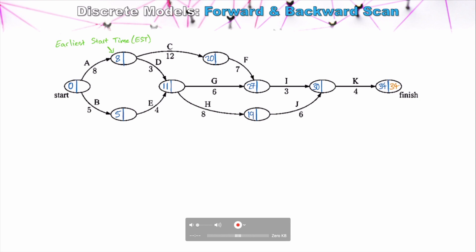This minimum of 34 units holds as long as we don't delay any critical tasks, or delay a non-critical task beyond its available slack time. We've now completed the forward scan. We're not yet ready to easily identify the critical path until we complete the backwards scan. The backward scan asks: what is the latest time we could start a task without delaying the overall project? For example, to complete Task K by 34 units, and since K takes four units, we must start K by 30 at the absolute latest. We refer to this as the latest start time, abbreviated LST.